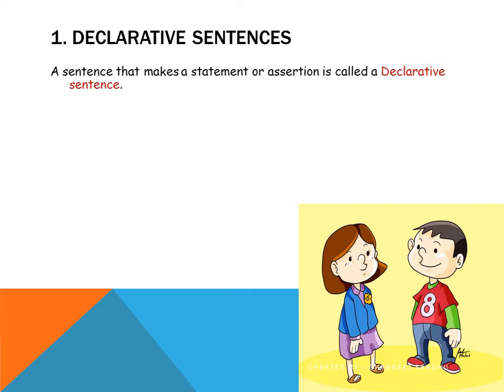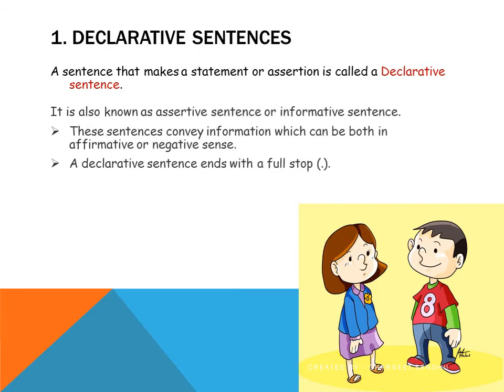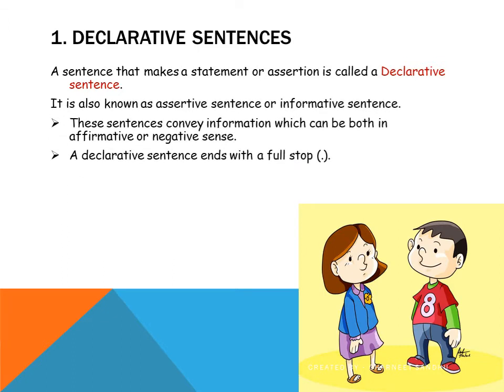These kinds of sentences basically give you some information, so they are called informative sentences also. You may also call these sentences assertive sentences. These sentences convey information, and the information which they convey can be both in affirmative or negative sense. A declarative sentence ends with a full stop. Let us look at some examples and try to understand.